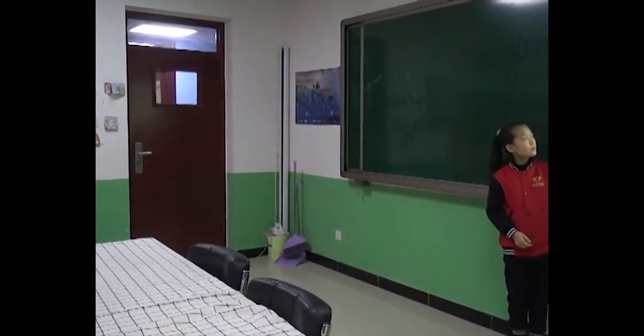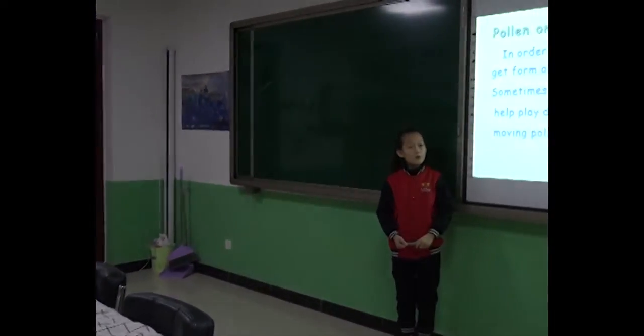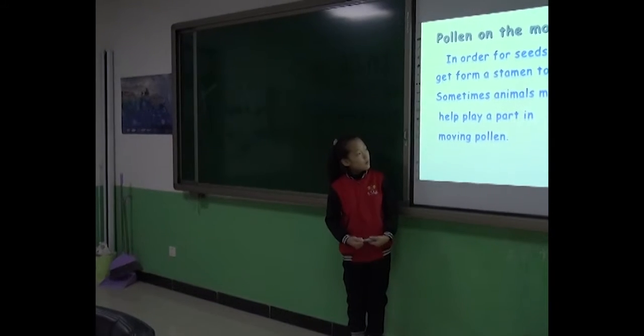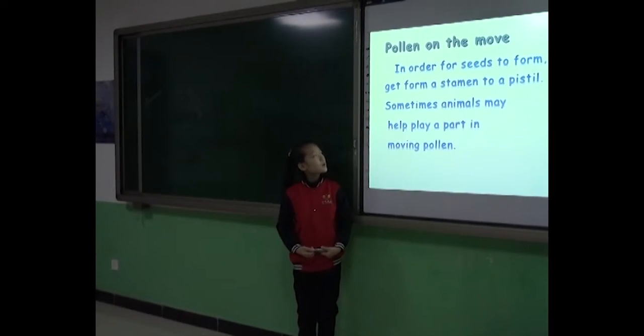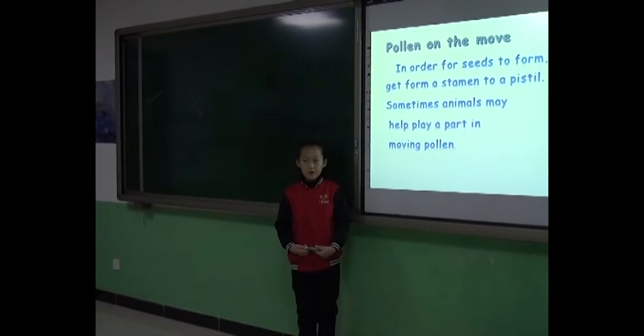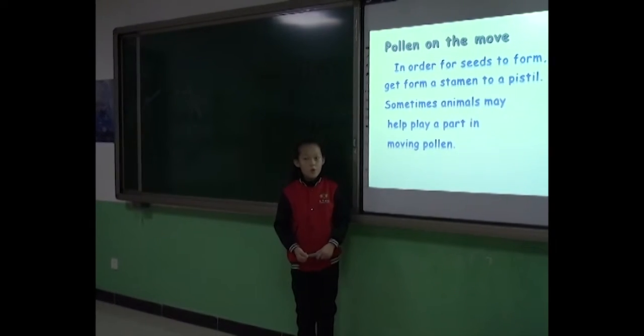Pollen on the move. In order for seeds to form, pollen has to get from a stamen to pistil. Sometimes animals may help play a part in moving pollen.